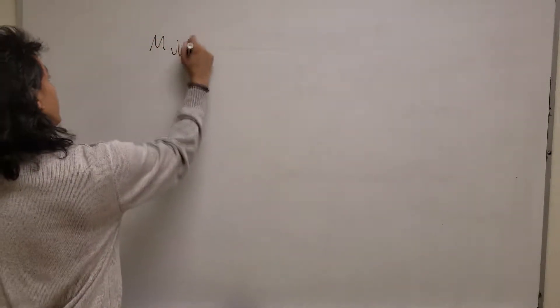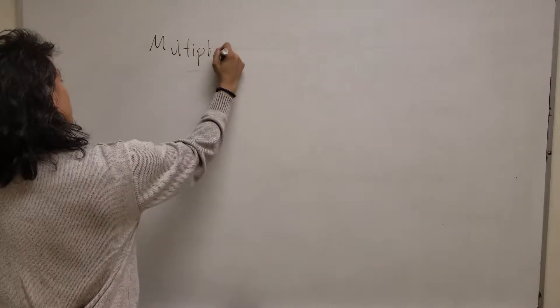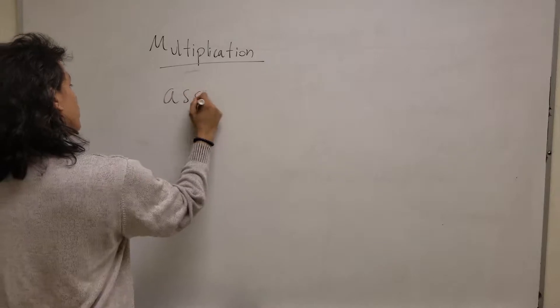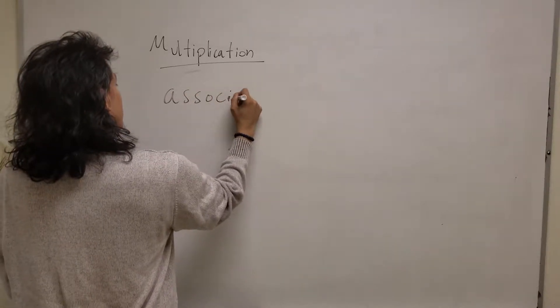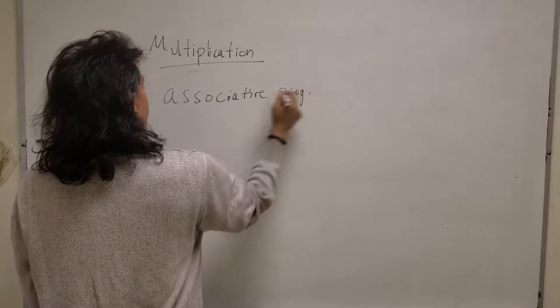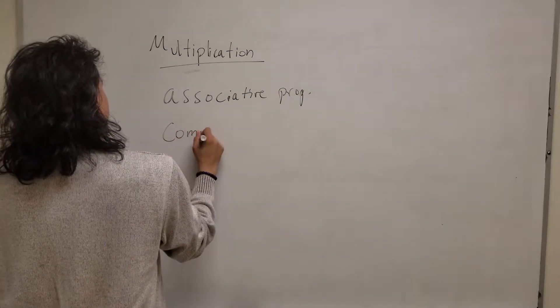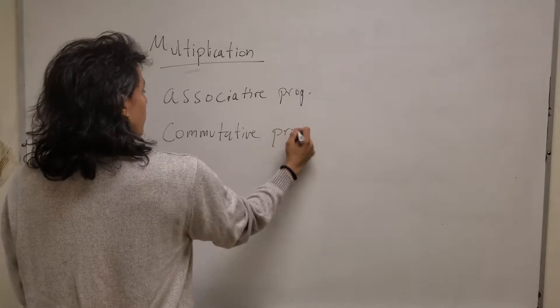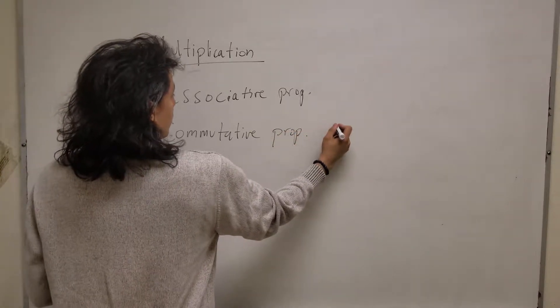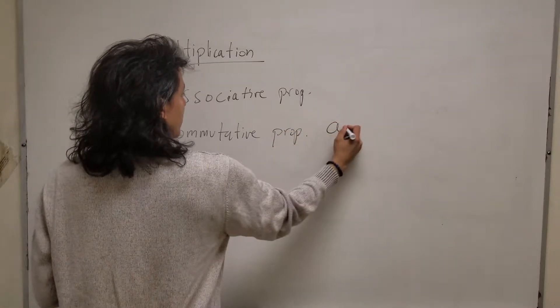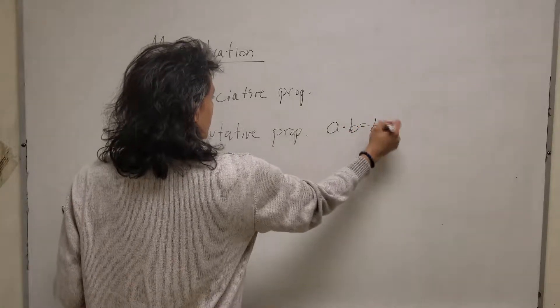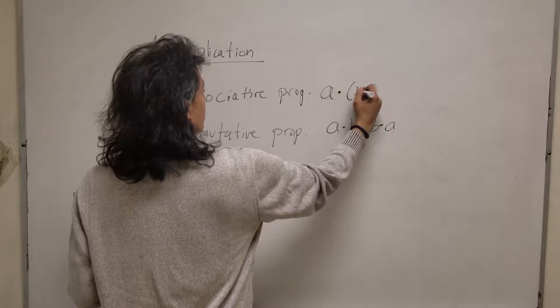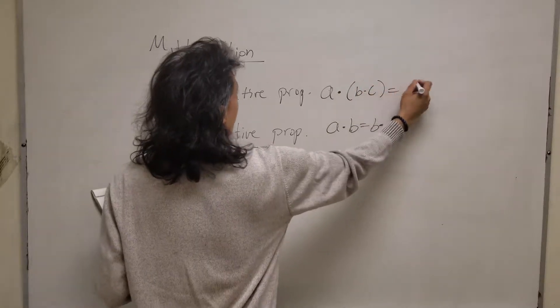Multiplication you are able to use associative property and commutative property where you're able to take A times B is the same as B times A, and when you're grouping terms it doesn't matter how you group them, you're going to get the same results.